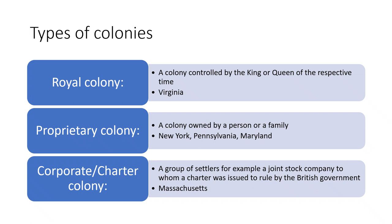Before studying the colonies in detail, we should understand the three types of colonies settled by the British: royal colony, proprietary colony, and corporate colony. A royal colony was controlled by the king or queen. For example, Virginia was originally a corporate colony established by the joint stock London Company, but after wars with the Powhatan tribe, the king took it over — Virginia became a royal colony around 1644.